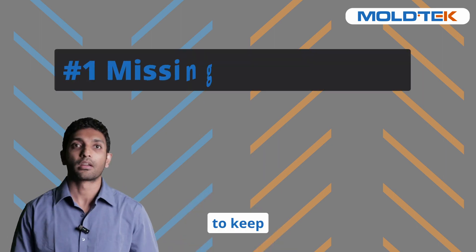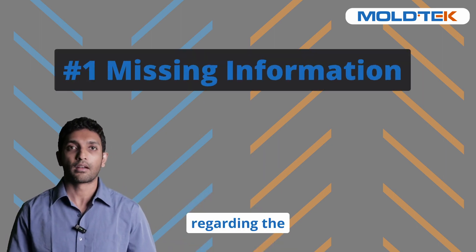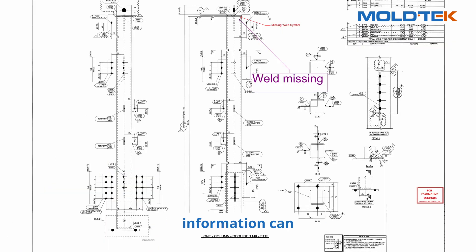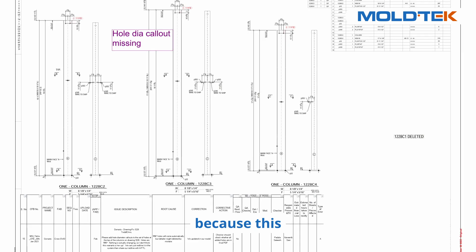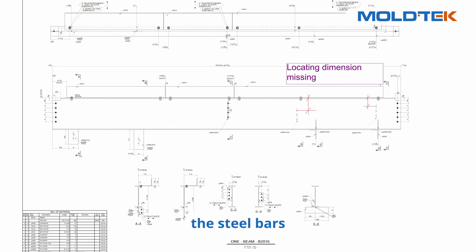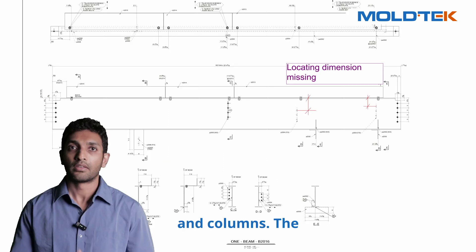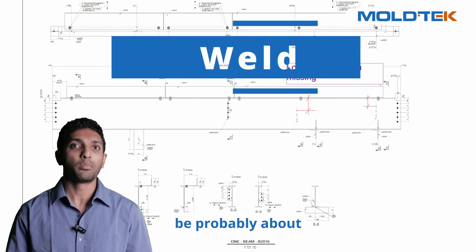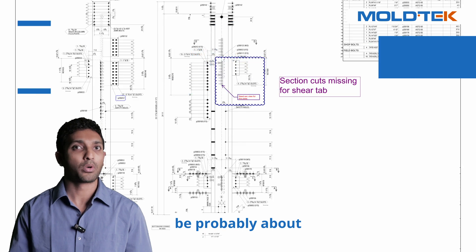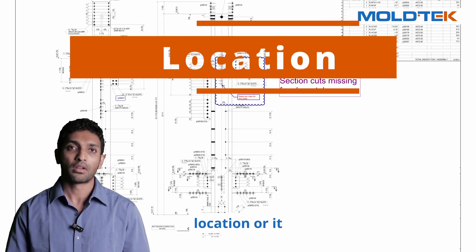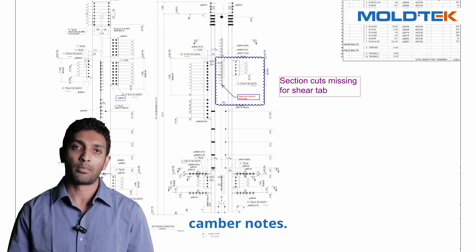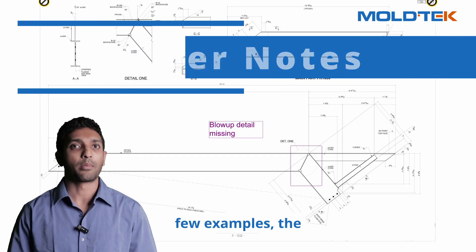The first aspect to keep in mind is regarding missing information. Missing information can have a huge impact on steel fabrication because this information is vital while ensuring the fabrication of the steel bars and columns. The missing information could be about a weld, about the location, or it could be about camber notes, just to give a few examples.